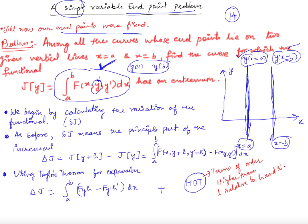Let's see what the corresponding Euler's equation will be in this case. We start with our usual procedure: to find the extreme values of the functional, we compute its variation δJ, for which we compute the increment. The increment is just J(y+h) minus J(y), where h is the increment function.